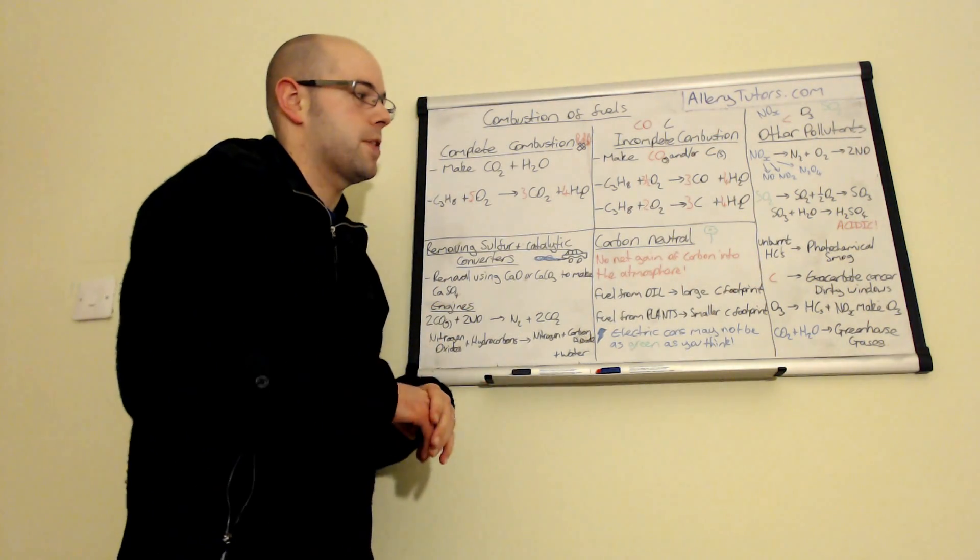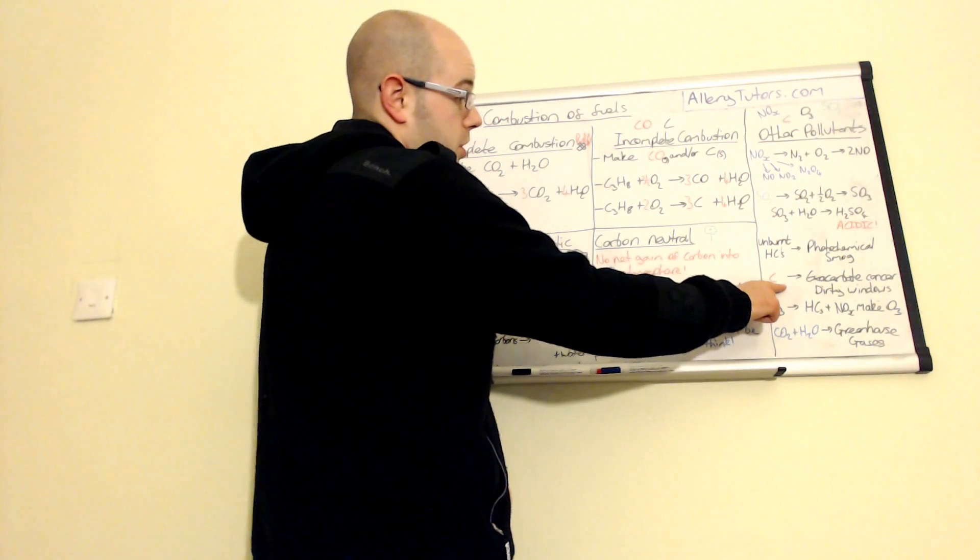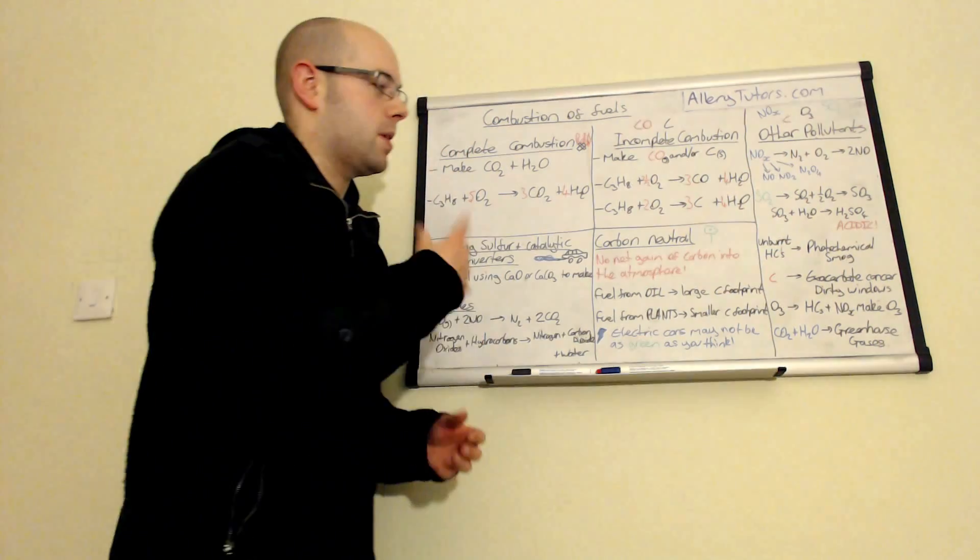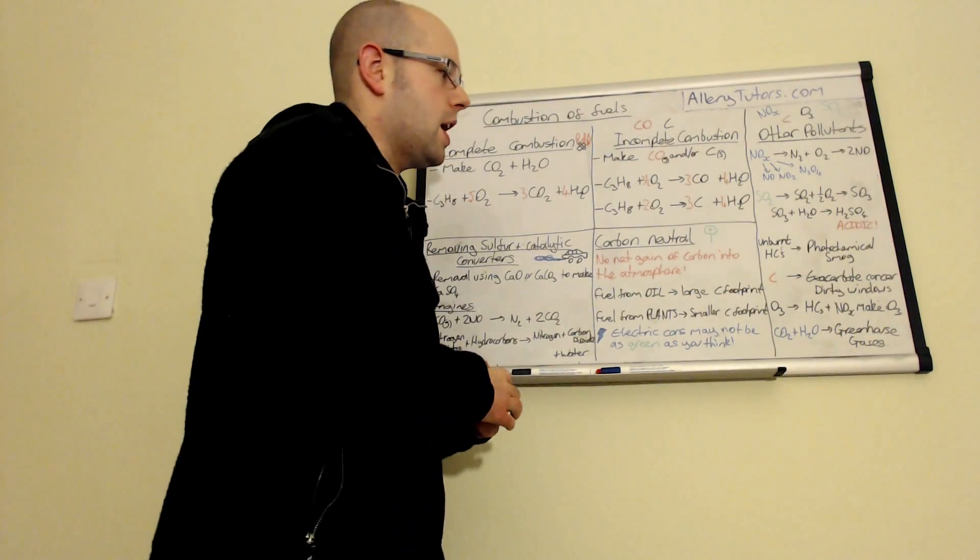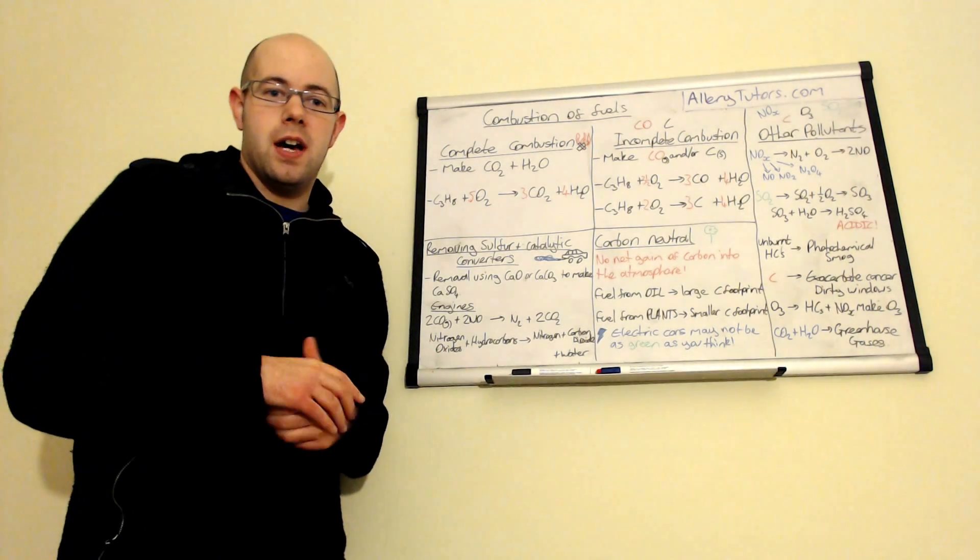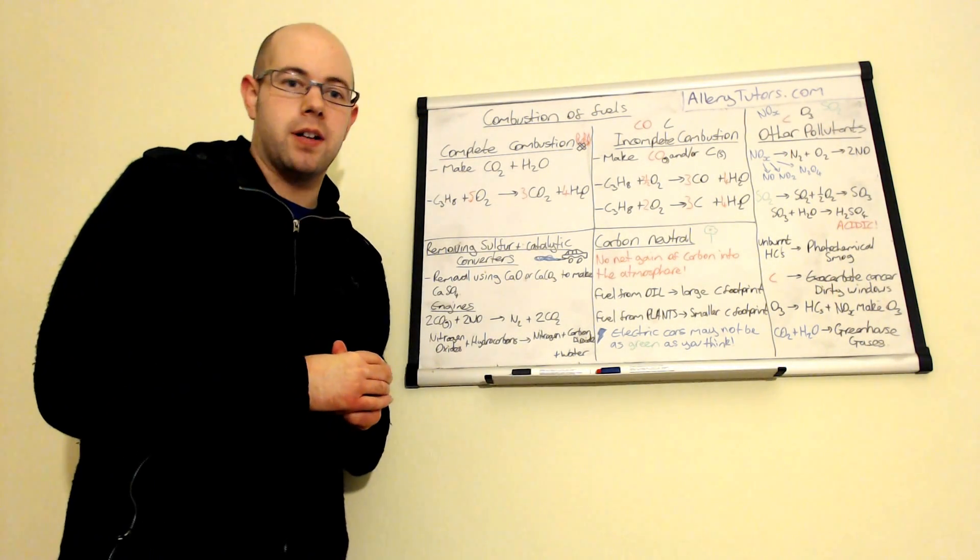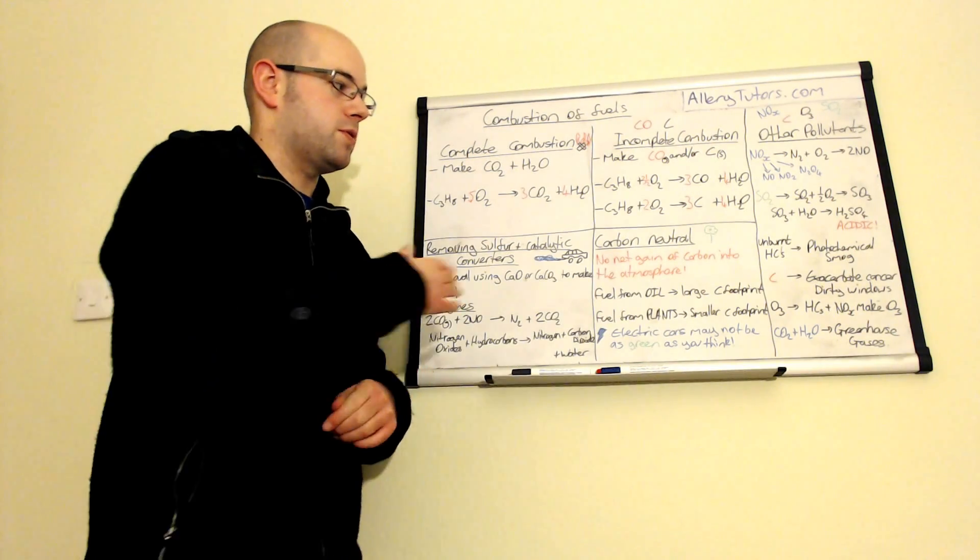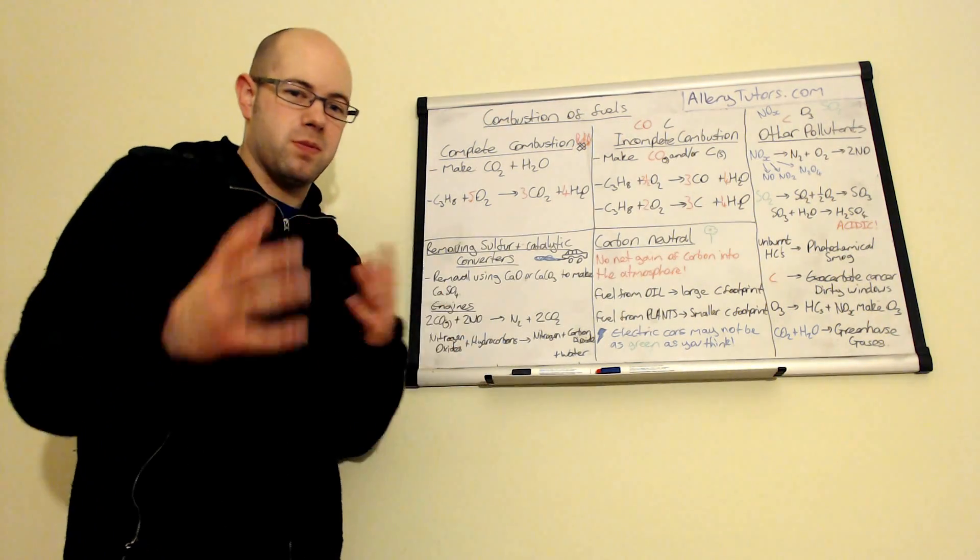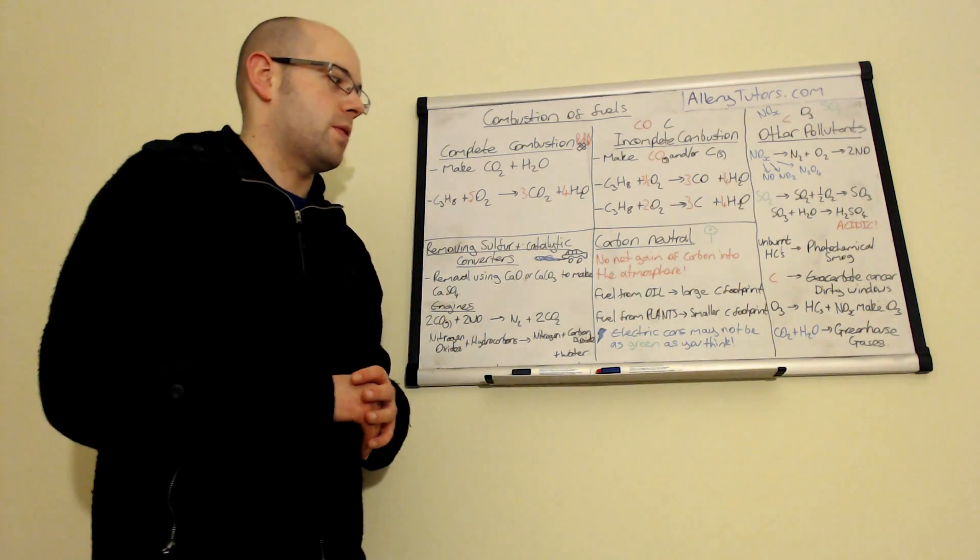So for example, methane, et cetera. And obviously, we've looked at carbon as well. These are carbon particulates. They can actually exacerbate asthma. They can cause cancer as well in the lungs, so lung cancer. And they also obviously create dirty windows on buildings and make objects outside dirty. So this is not very good either.